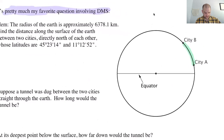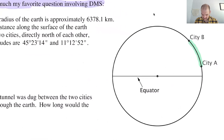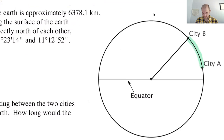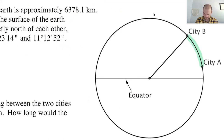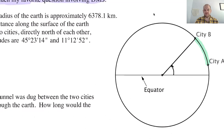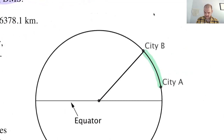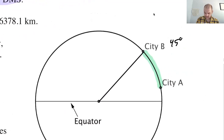We're finding the distance between two cities directly north of each other, whose latitudes are 45 degrees, 23 minutes, 14 seconds and 11 degrees, 12 minutes, 52 seconds. The first angle — 45 degrees, 23 minutes, 14 seconds — is the angle formed here at the center of the Earth.